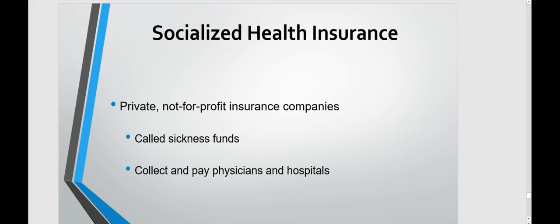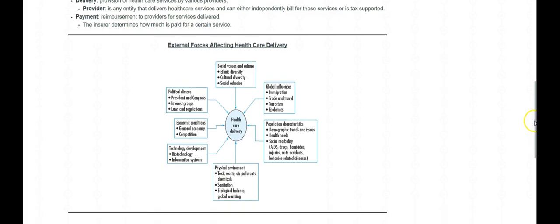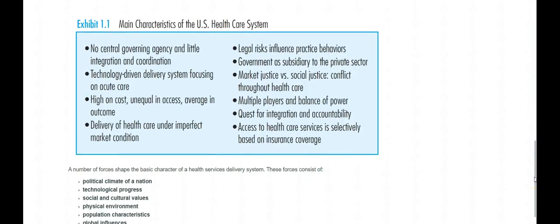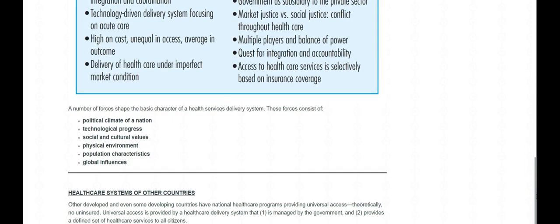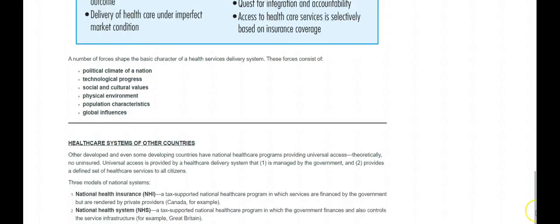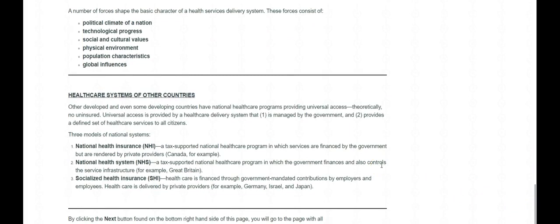I just wanted to touch on a couple of slides, and of course if you have any questions on anything covered in this video, do not hesitate to let me know. Jumping back to the module page — here we have the main characteristics of the US healthcare system and the number of forces that shape the basic character of the health service delivery system, as well as a brief overview of health care systems of other countries. That wraps it up — if you have any questions, be sure to let me know. Take care, bye.